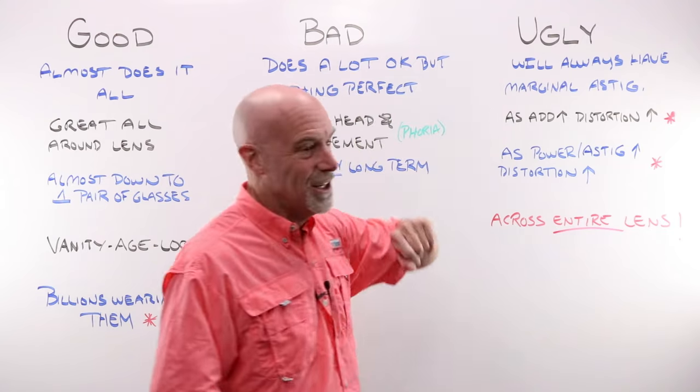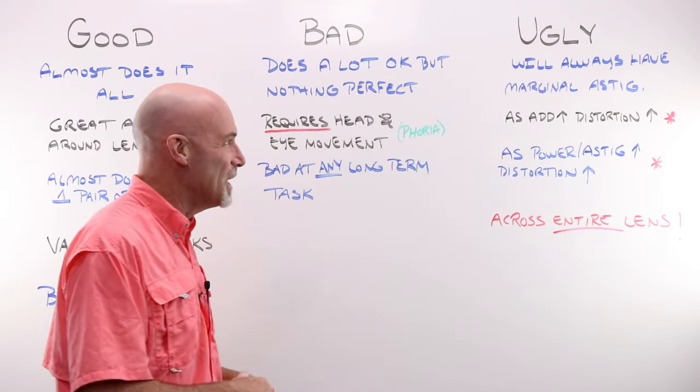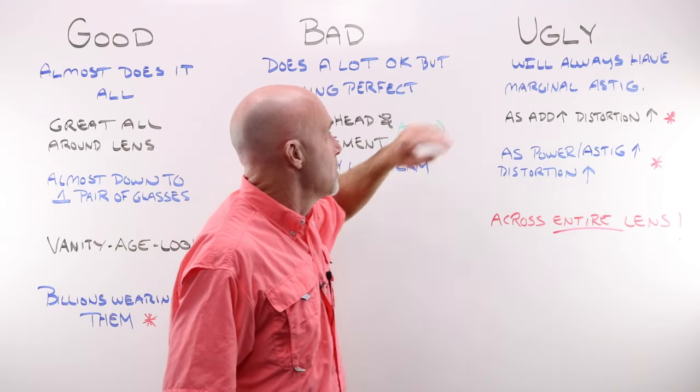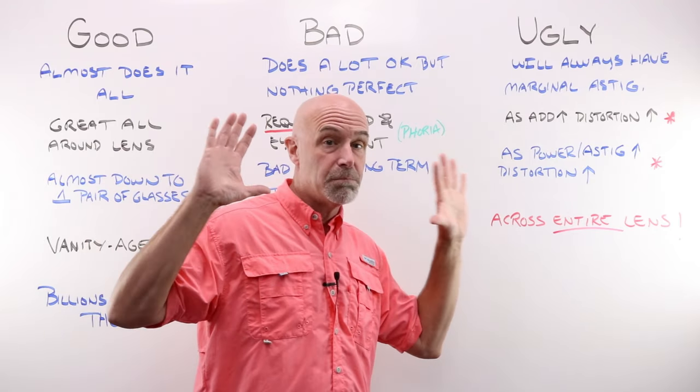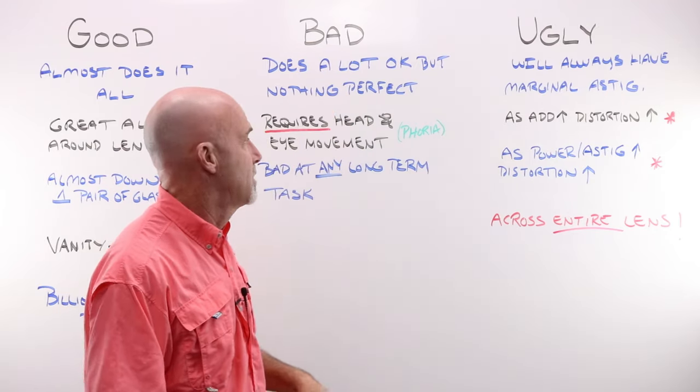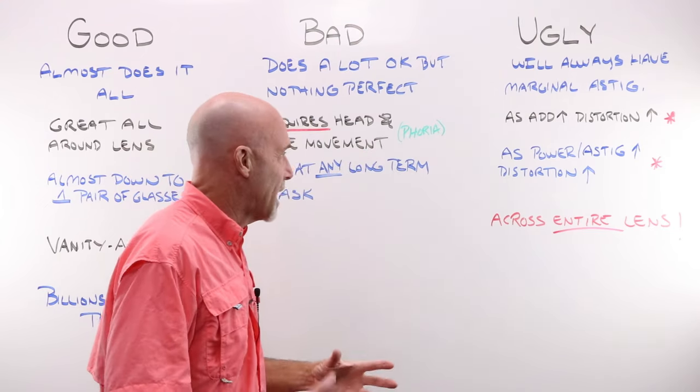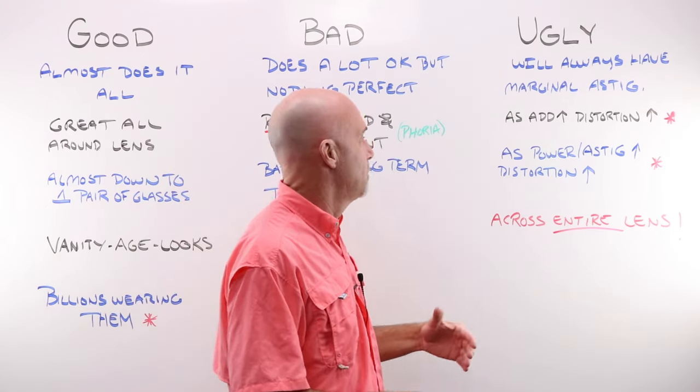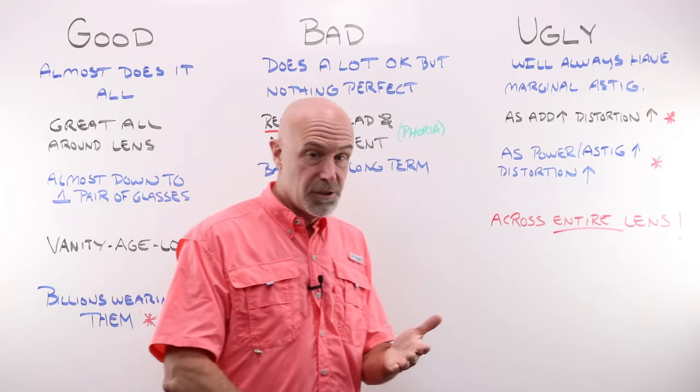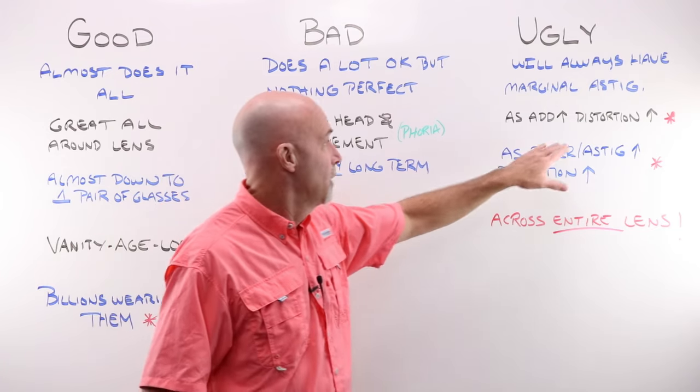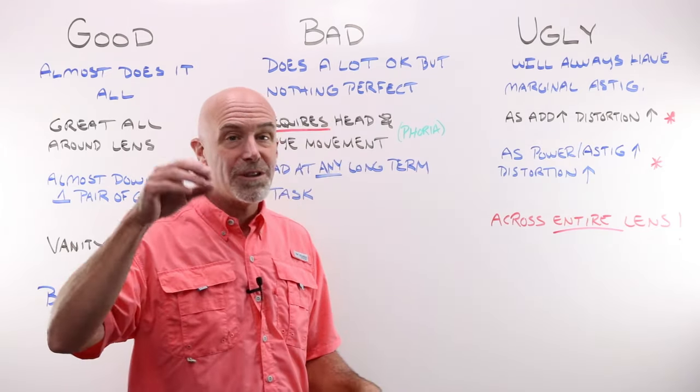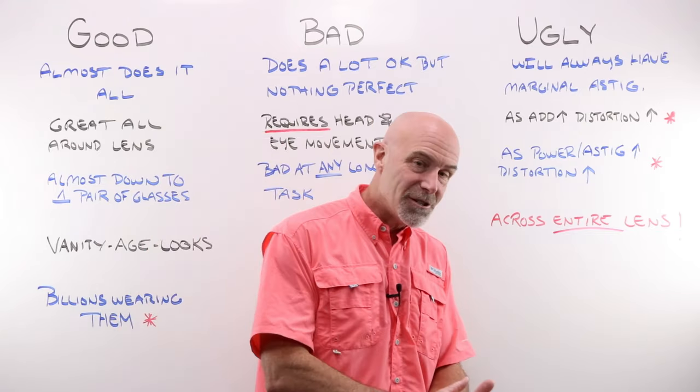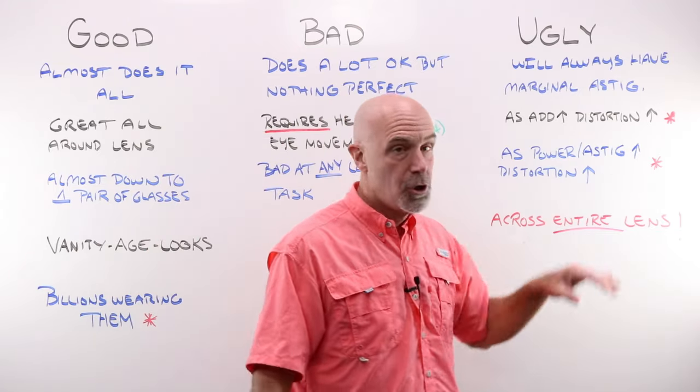The ugly, and this is really pretty ugly. A progressive lens will always have that marginal astigmatism. It will always have that blur out to the sides. Can't get around it. As add power goes up from one to 150 to two to 250 to three, as add power increases distortion throughout the entire lens, not just in the add portion, goes up.